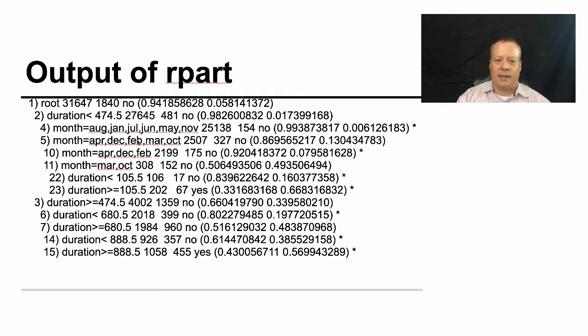On the other hand, this other one basically goes down a set of paths that narrows down what month it is. And if it is in March or October, and they've talked to them for a long time in the past, only 105 seconds, so that's only a couple of minutes, then they are likely to say yes. So that's the two paths it winds up generating.